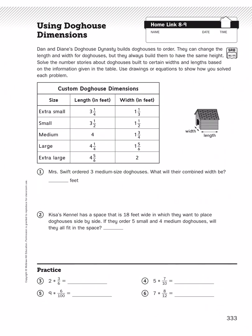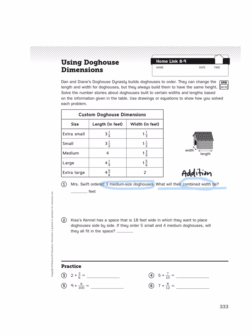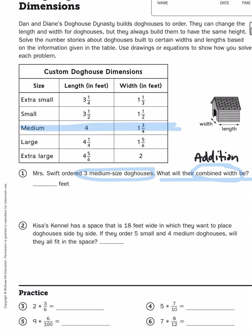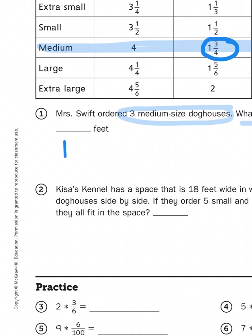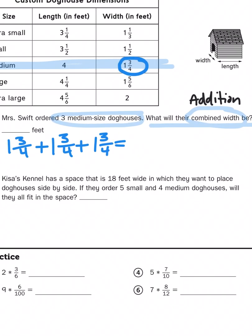Let's take a look at number one. It says Mrs. Swift ordered three medium-sized doghouses. What will their combined width be? When I see the word combined, I know that means I'm going to be adding some numbers together. I have to look at my table at the medium doghouse dimensions, and it shows me that the width in feet is one and three-fourths feet. So simply put, this problem is one and three-fourths plus one and three-fourths plus one and three-fourths equals C for combined.